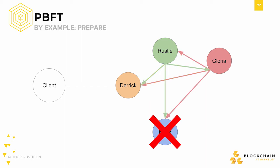If a node accepts a pre-prepare message, it follows up by sending out a prepare message to everyone else. Prepare messages are accepted by receiving nodes so long as they're valid, again based on the sequence number, signature, and other metadata.